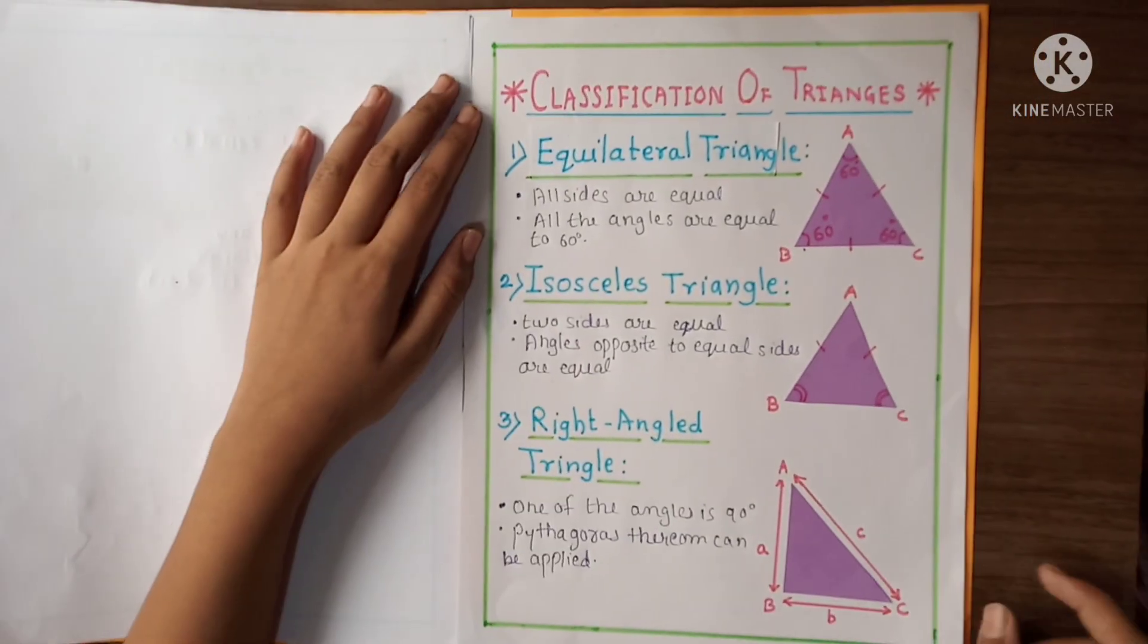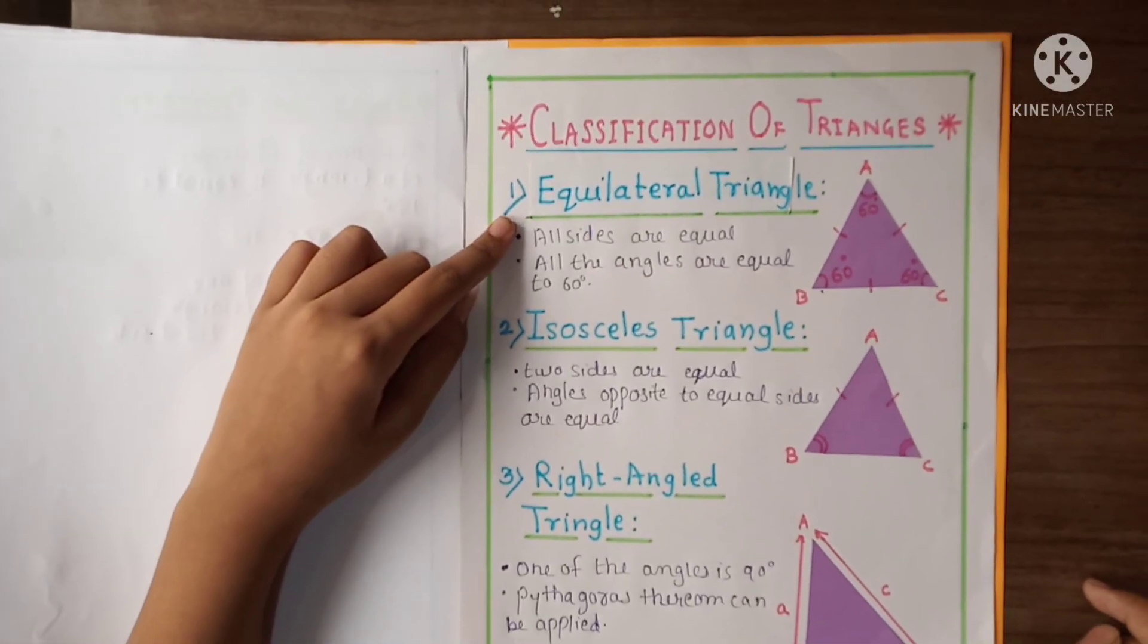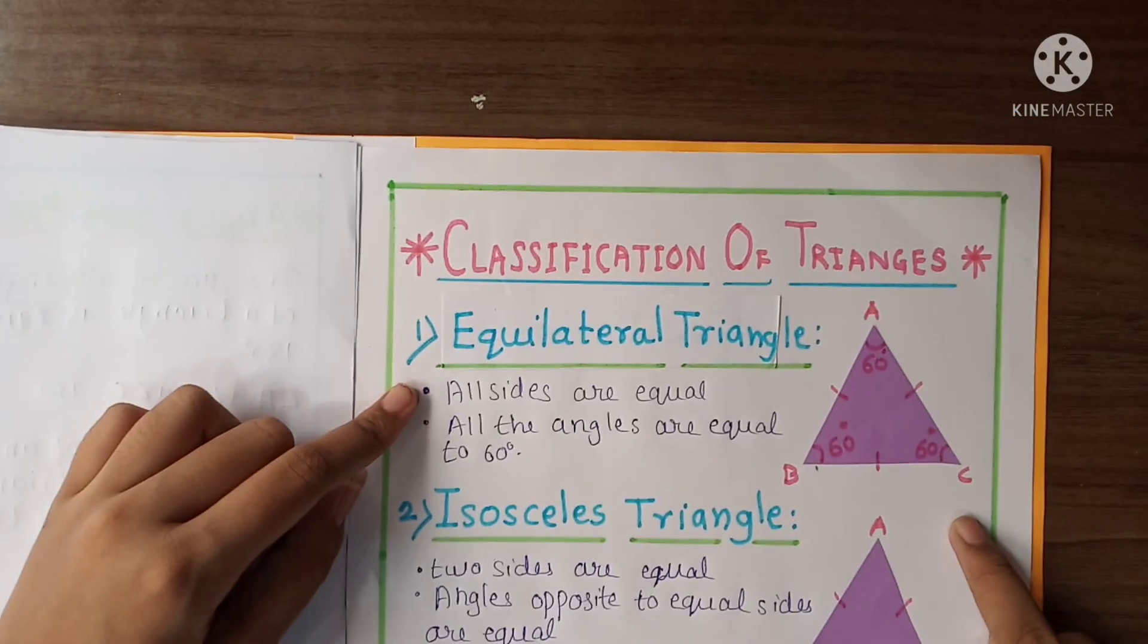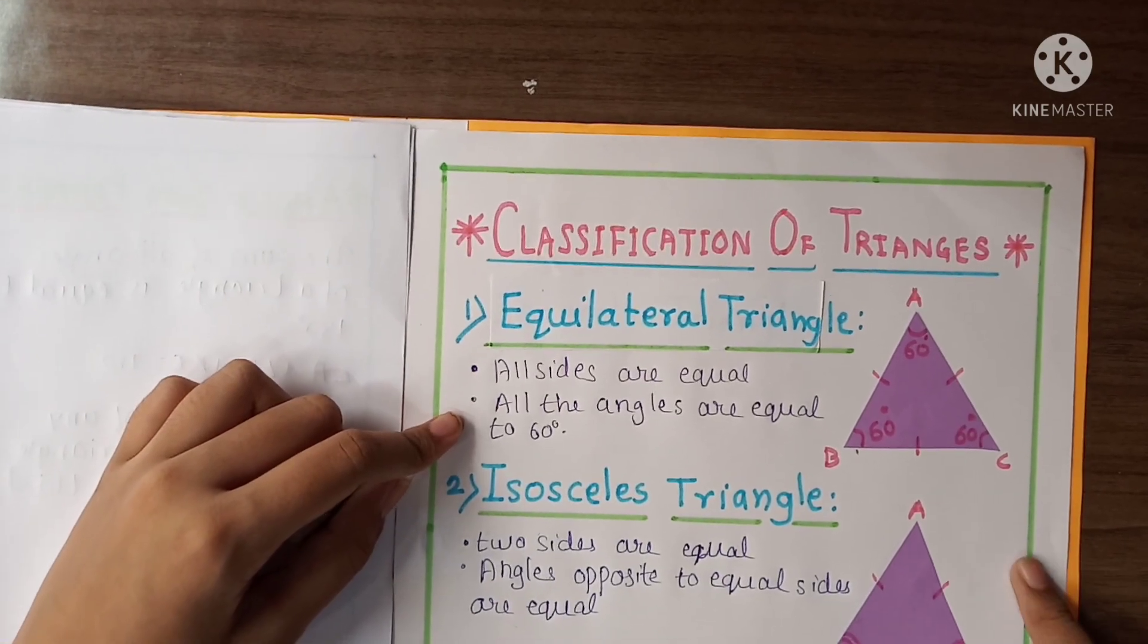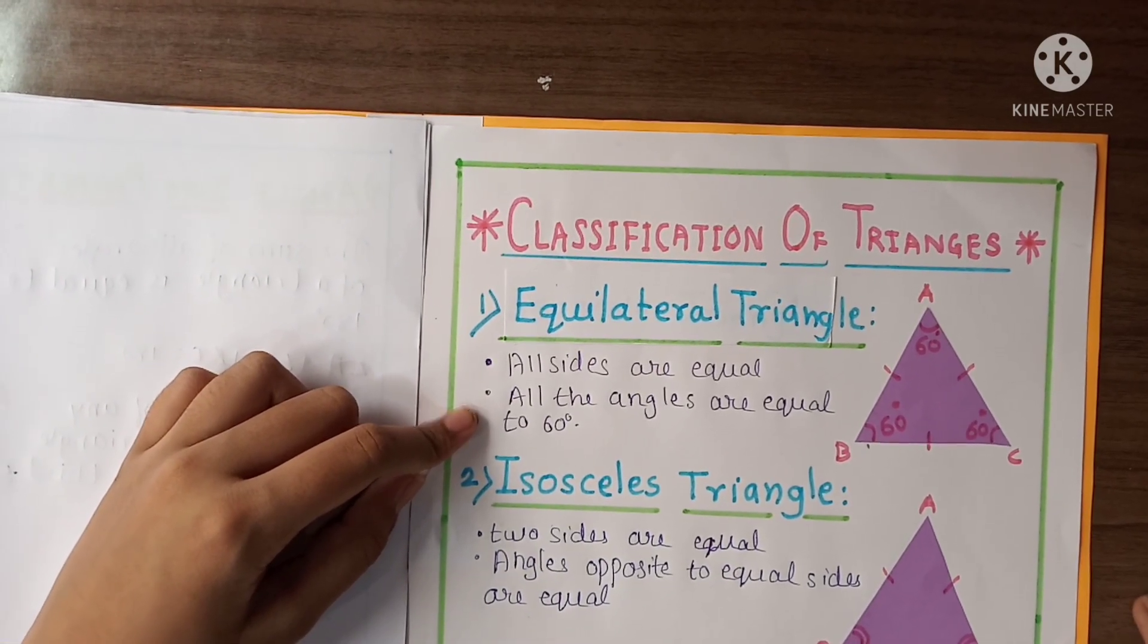Let's see the next. Here is the classification of triangles. First one is equilateral triangle. And here is the diagram of equilateral triangle. First point is all sides are equal. Second point is all the angles are equal to 60 degree.